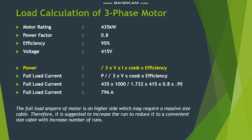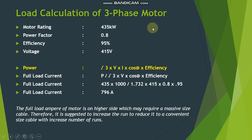Let's start. I would like to set an example for a motor with a capacity of 435 kilowatts, which is a three-phase motor with a power factor of 0.8. The efficiency of the motor is 95% and it will operate at 415 volts. The power formula for calculating motor rating is √3 × V × I × cos θ × efficiency. By rearranging this formula, you can calculate the full load current, which comes to 796 amperes.